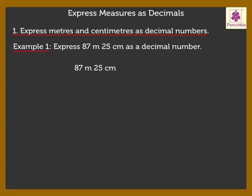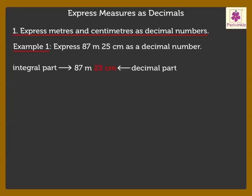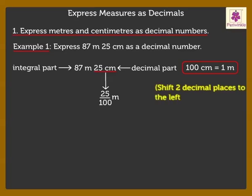Step 1: Here, 87 forms the integral part of the decimal number. Step 2: Keep the integral part as it is. Step 3: Change 25 centimeters — that is the decimal part — into meters. We know that 100 centimeters is equal to 1 meter. We get 25 centimeters is equal to 25 upon 100 meters. Here, we shift two decimal places to the left as the divisor is 100. We get 0.25 meters.